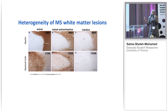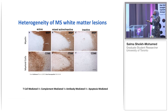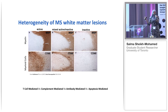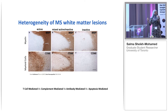Not only is there heterogeneity in lesion activity — and these aren't the only three types — we also see different patterns of demyelination. A lesion could be T cell mediated, apoptosis mediated, complement mediated, or antibody mediated. There's still controversy about this in the field, because pathology is just a snapshot in time. How do we really know these are four different patterns of demyelination and not just one stage of the same pattern?